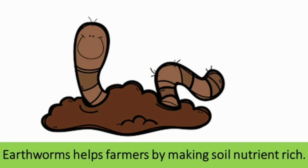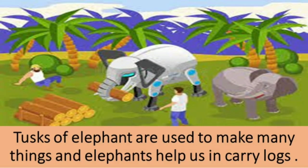Earthworm, which is an insect, helps farmers by making soil nutrient rich. Kenchua kisano ki bohat help karta hai, unki mitti ko ubjao bana kar. Elephants are also very useful. Tusks of elephants are used to make many things, and elephants help us in carrying logs. Elephant ki tusk, yaani uske do bade-bade white teeth jo bahar ki taraf hote hain, woh bohat hi kaam ke hote hain, aur inse bohat sunder cheezein banayi jaati hain. Sath hi, bade-bade lakdon ko yahaan se wahaan le jaane ke liye elephants ka use hota hai.